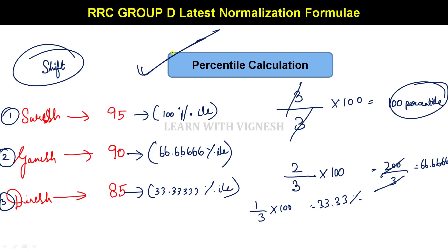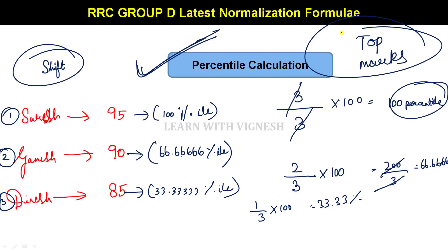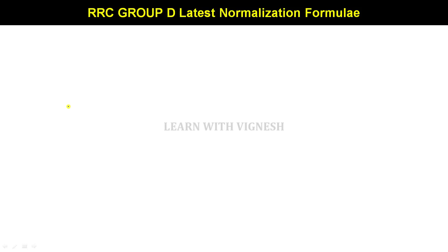Percentile-based calculation is very beneficial to you. Overshift is a top mark — it's useful to you. What do you know? A shift is a top mark. It's a very hard paper. It's tough. It's not a top mark.